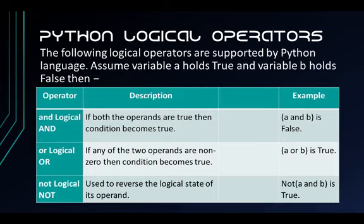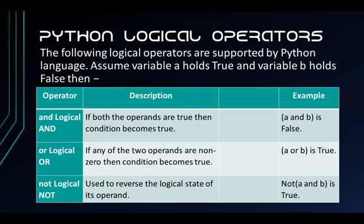Next are the logical operators supported by Python. Let's assume that variable A holds true and variable B holds false. The AND logical operator states that if both operands are true, the condition becomes true. The OR logical operator states that if any of the two operands are non-zero, the condition becomes true. The NOT logical operator is used to reverse the logical state of its operand.